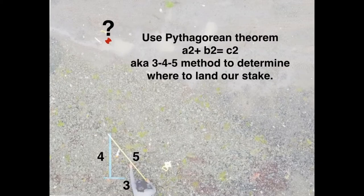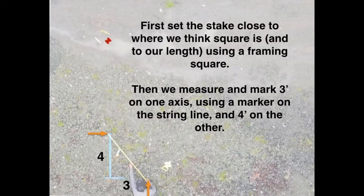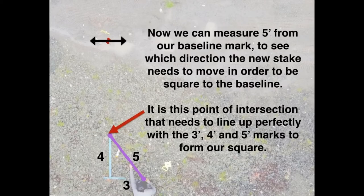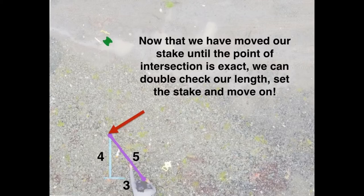To make a square we use the 3-4-5 method — you can double it up as well. Basically, mark out three feet and four feet on either side, then use the five-foot measurement between them. The intersection of those three points creates a square. Set that far pin, get it close, then pull your measurement to five feet. Move that far stake until the point of intersection matches up. Adjust it a couple inches back and forth until you get it square, then lock that pin in.